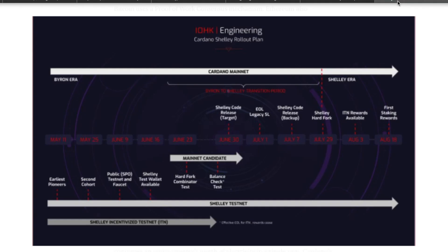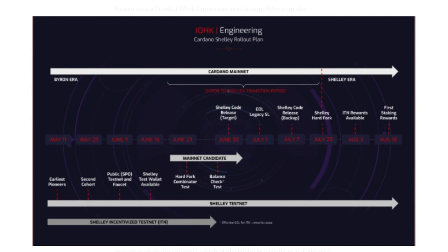Looking at what's coming up: today is June 16th with the Shelley test wallet available for stake pool operators. On June 23rd we have the hard fork combinator test, along with the balance check test shortly after. On June 30th is the Shelley code release target, when the code for the Shelley mainnet will be available to entities such as exchanges to get onboarded, ahead of the hard fork on July 29th.